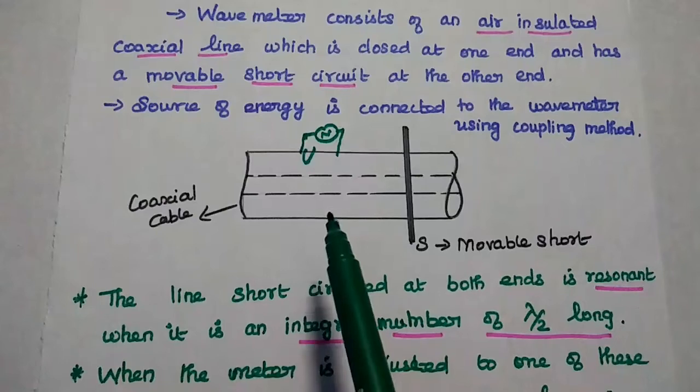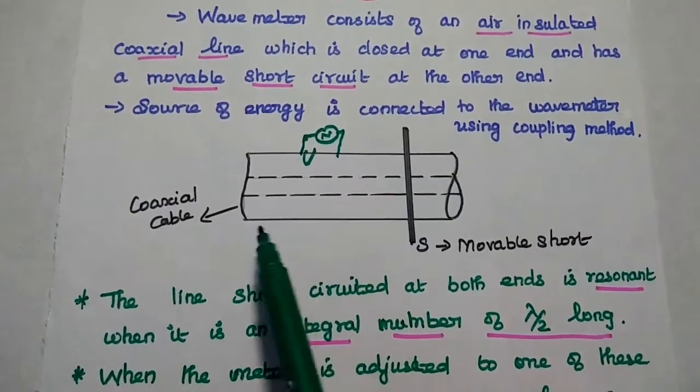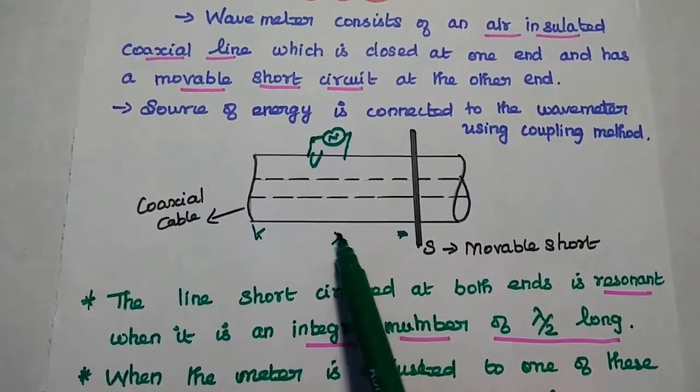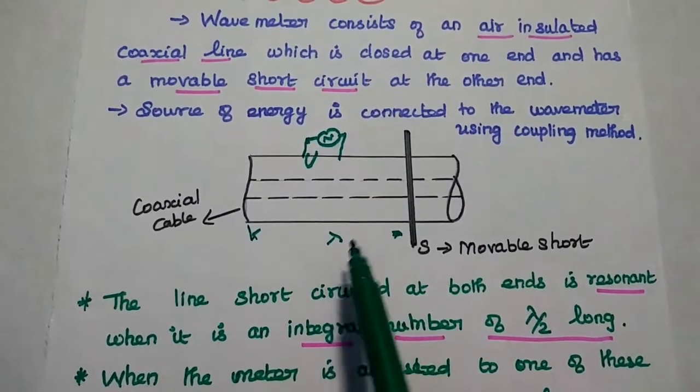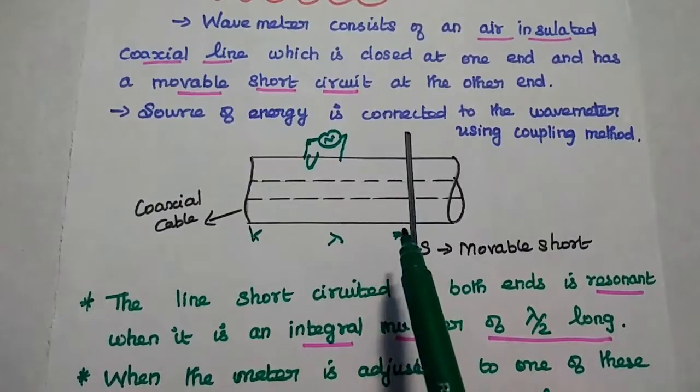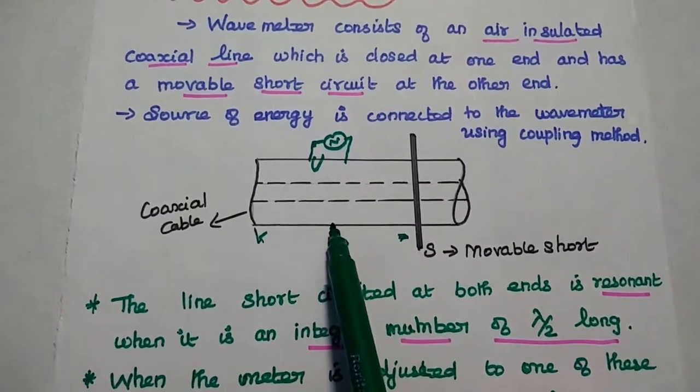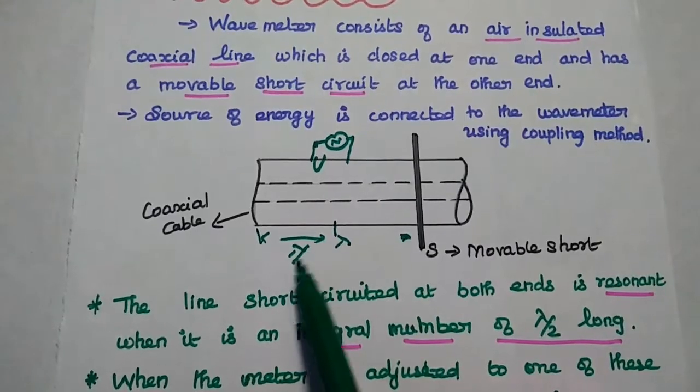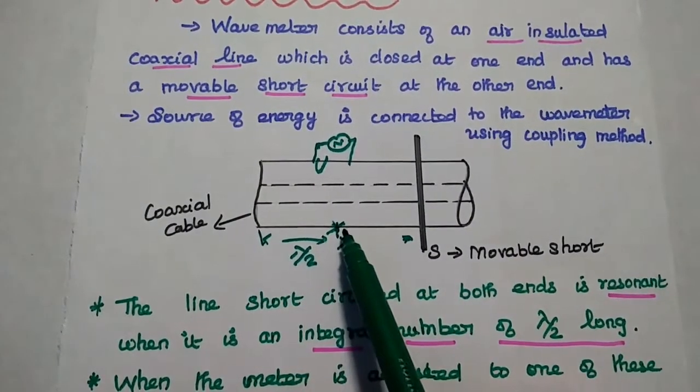For example, if the distance between this end and this end is lambda, it is having the resonant condition. If we are moving this light towards this direction, whenever it reaches the distance like lambda by 2, then it can achieve the resonant condition.